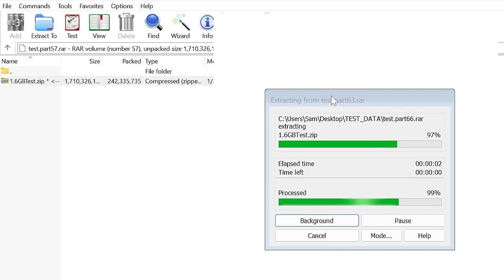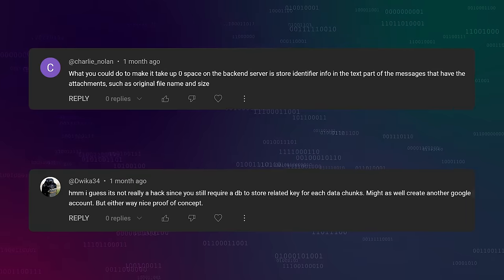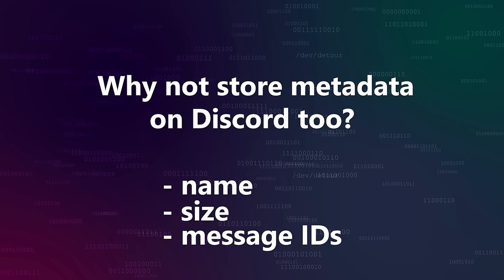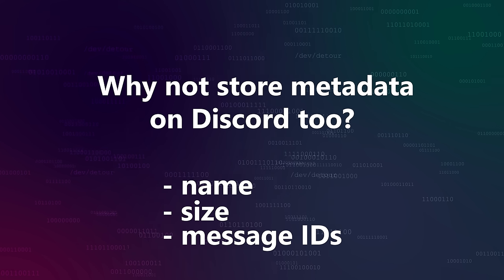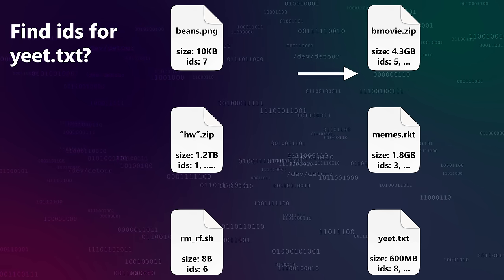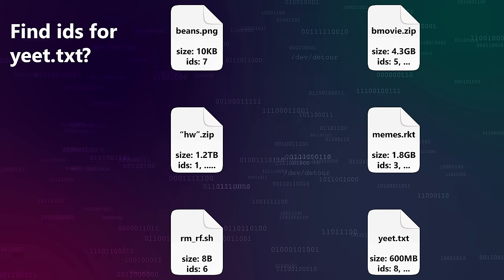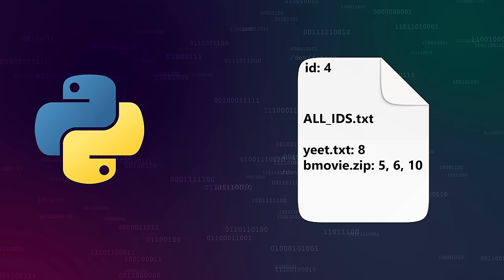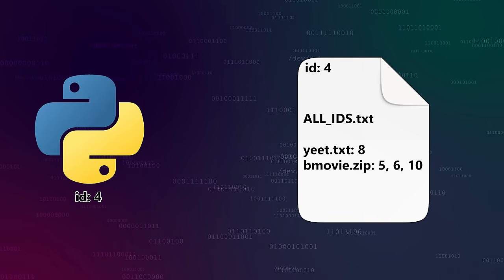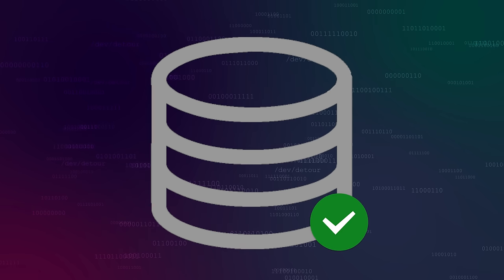Another suggestion was to store information about a file — like its name, size, and the message IDs of the attachments that make it up — on Discord itself, for instance with the last message sent for a file. But with that approach, anytime we want to read a file we'd have to search the whole channel, which is doable but slow, especially with a huge number of files. We could also have a special message that tracks all stored files and store its ID, but that's just a database with extra steps. Keeping a small local database is a compromise I'm happy to make.